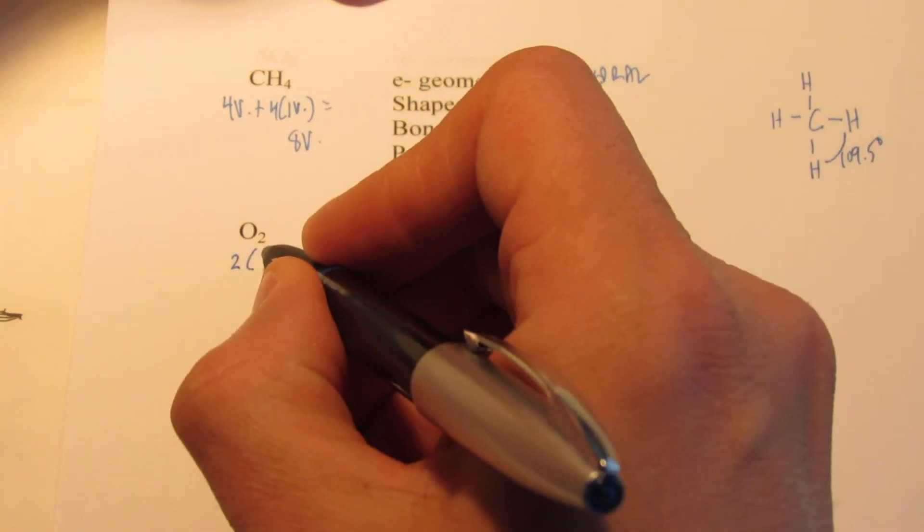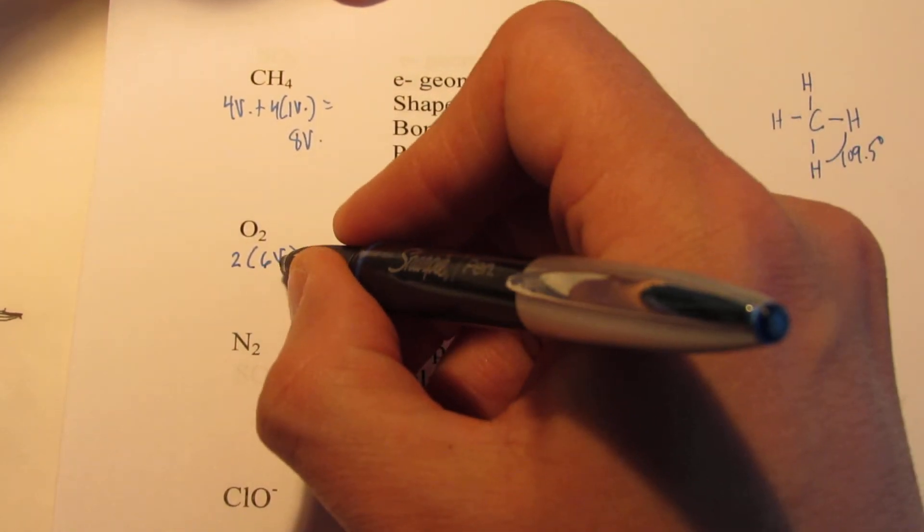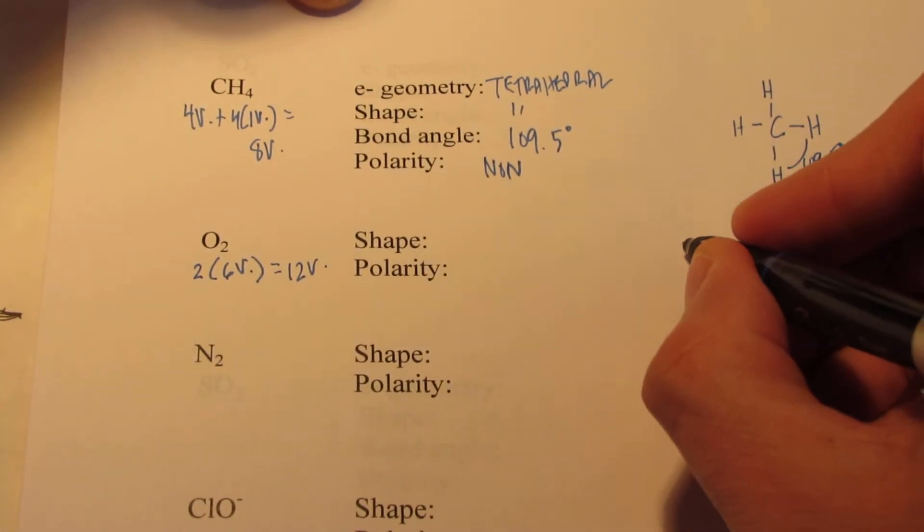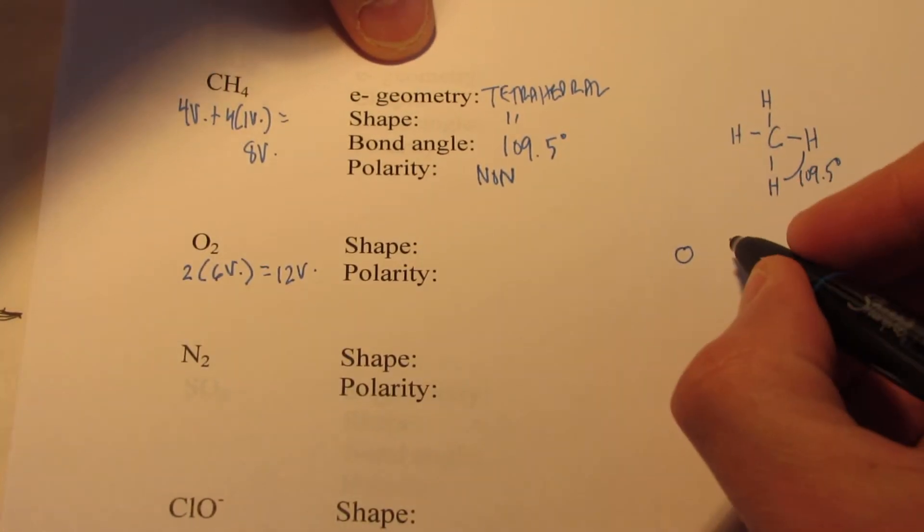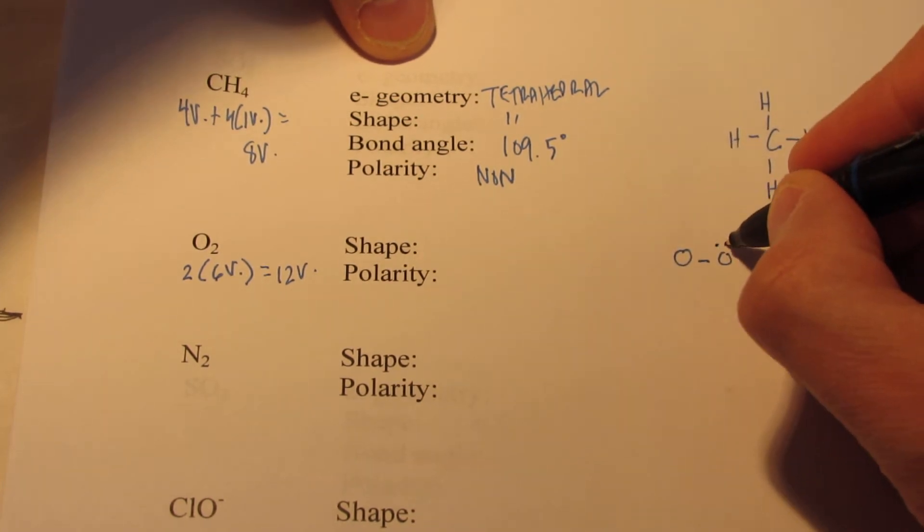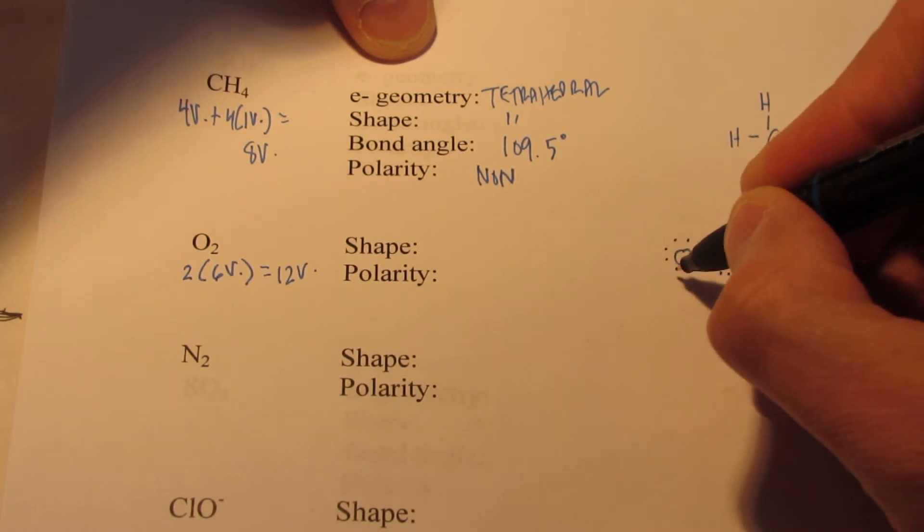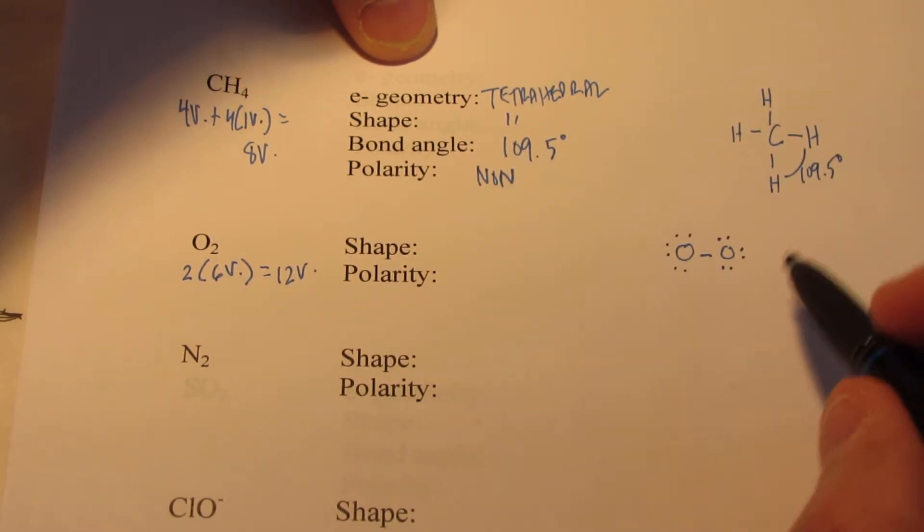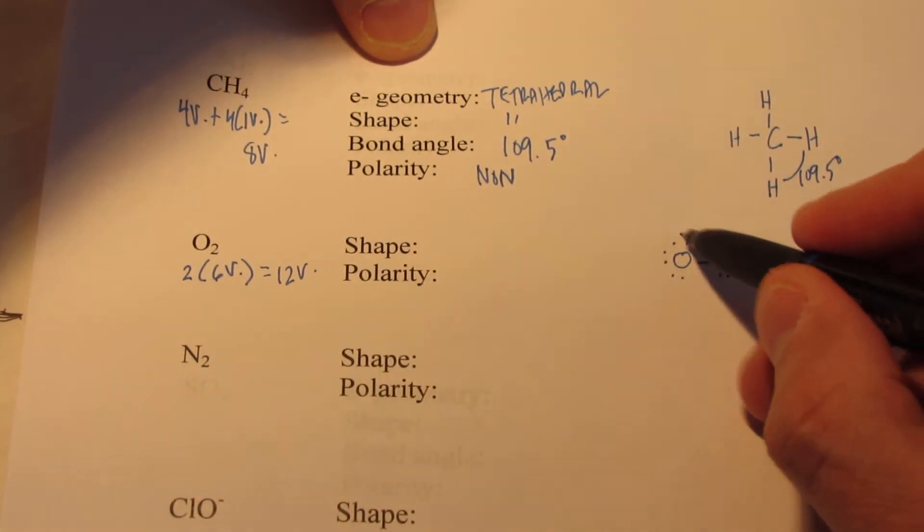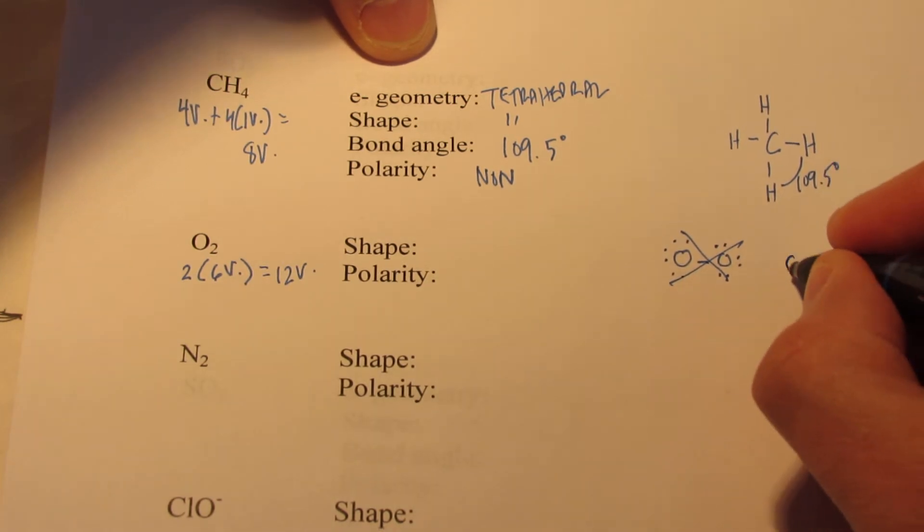There are two oxygen atoms, each in group 16, so six valence electrons apiece. That gives us 12 valence to work with. We can try drawing the Lewis structure by putting one pair between the oxygen atoms and then giving each oxygen a full octet. We've used 2, 4, 6, 8, 10, 12, 14. We're only allowed 12, so obviously that's not a valid Lewis structure.